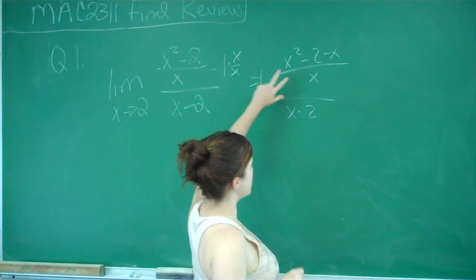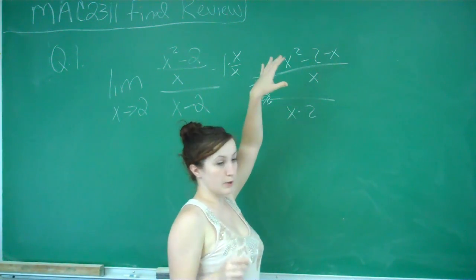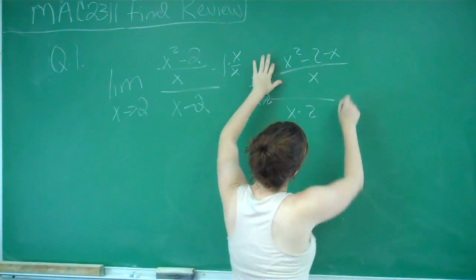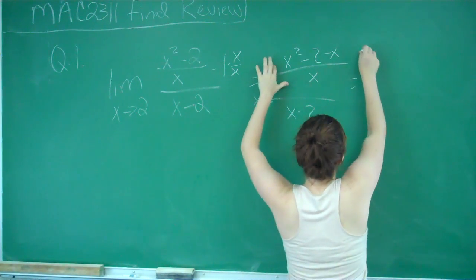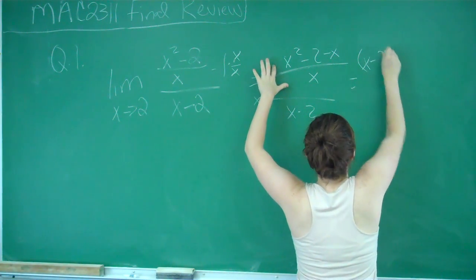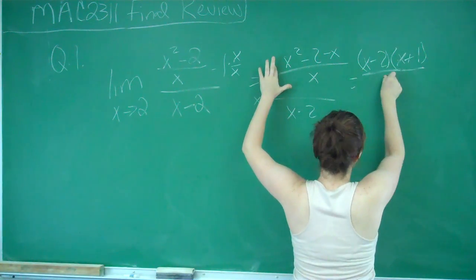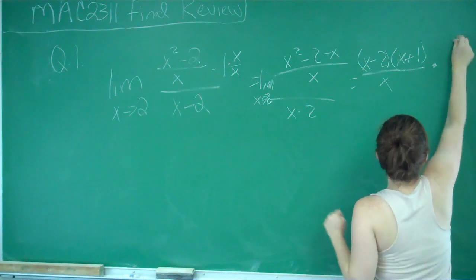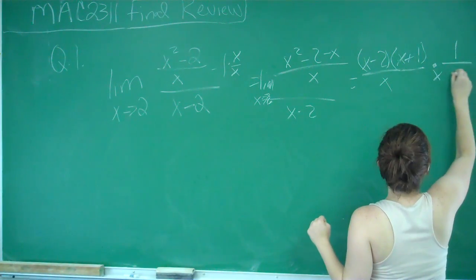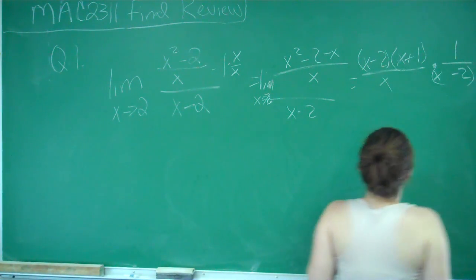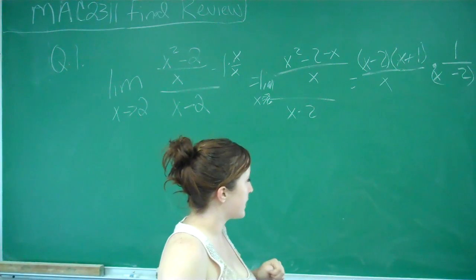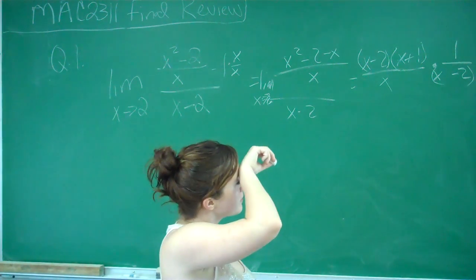And so now what we need to do is factor our numerator here, this top portion. And this factors into x minus 2 times x plus 1 over x, and then when we divide, remember that's the same thing as multiplying by the reciprocal. So we've got x minus 2 times x plus 1 over x times 1 over x minus 2.